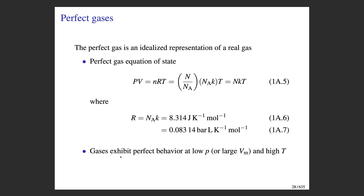We'll move on to the next subtopic: the perfect gas. Atkins prefers the term 'perfect gas' rather than 'ideal gas' because there's something else in physical chemistry called the ideal solution, and it's advantageous to call them different things to avoid confusion.